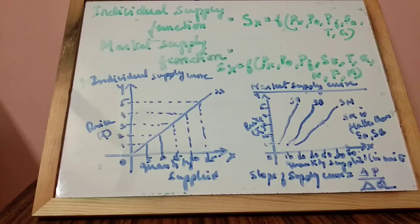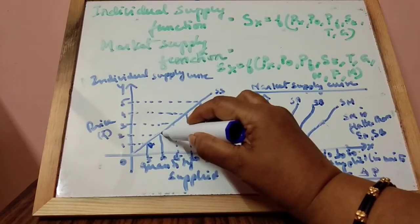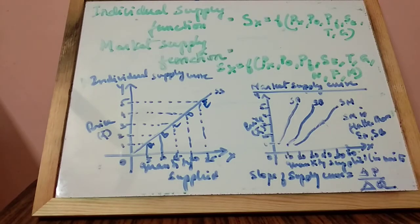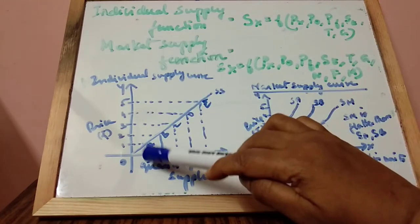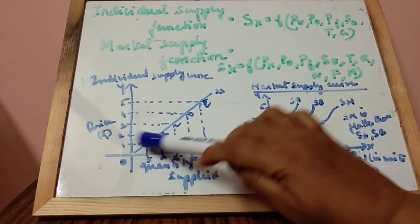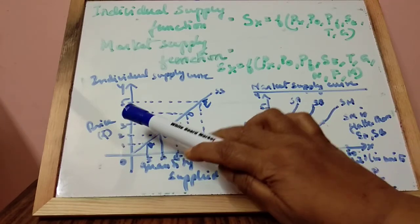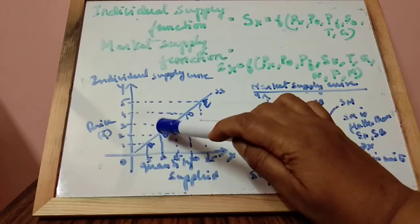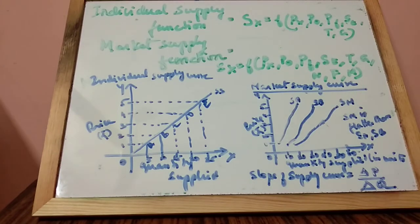The individual supply curve refers to a graphical representation of the individual supply schedule. The data points A, B, C from the schedule are plotted as meeting points of price and quantity. Point A is plotted, then point B, and by joining all the points you get the supply curve. It slopes upwards because of the positive relationship between price and quantity supplied.